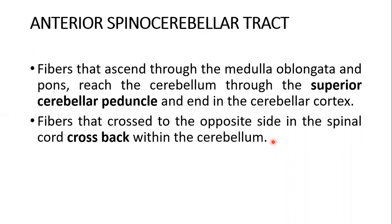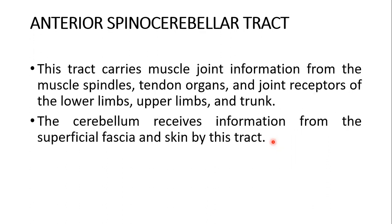In the cerebellum, the deficit is on the ipsilateral side, not the contralateral side. But in the cerebrum, the deficit is produced on the contralateral side — that is the important difference. The anterior spinocerebellar tract carries muscle joint information from muscle spindles, tendon organs, and joint receptors of the lower limbs, upper limbs, and trunk. The cerebellum also receives information from the superficial fascia and skin via this tract.